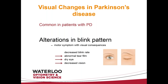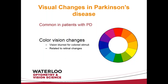We also have alterations in the blink pattern. This is really a motor symptom but it has visual consequences: decreased blink rate leads to an abnormal tear film, which leads to dry eye, which leads to decreased vision. Color vision changes have also been observed — people feel they have blurred vision for colored stimuli. This is being determined to be related to retinal changes, though like many of these things we don't understand it particularly well.